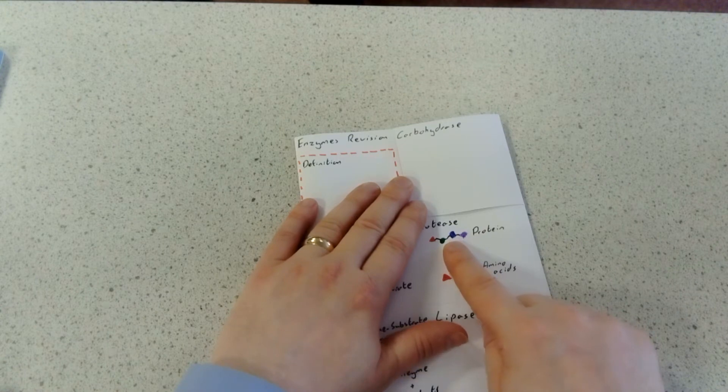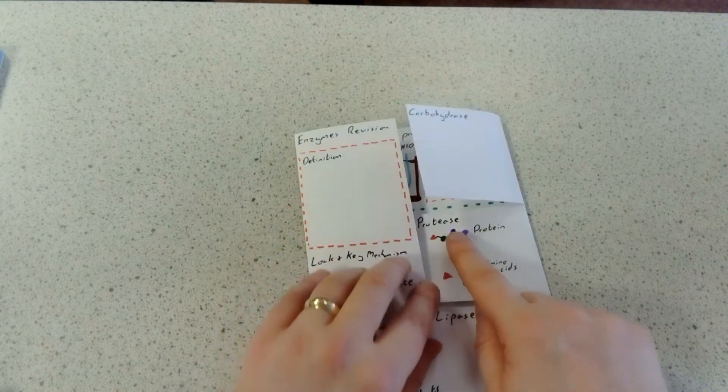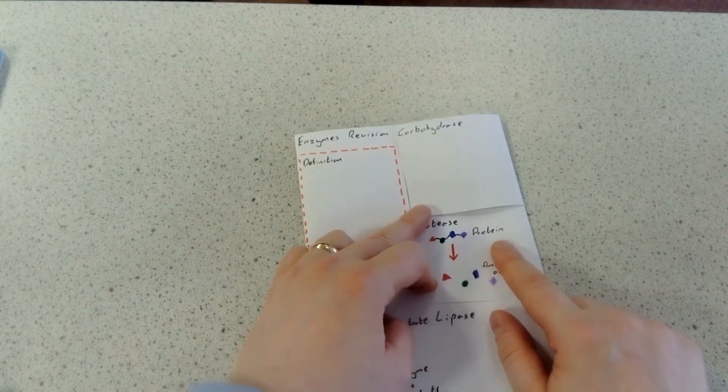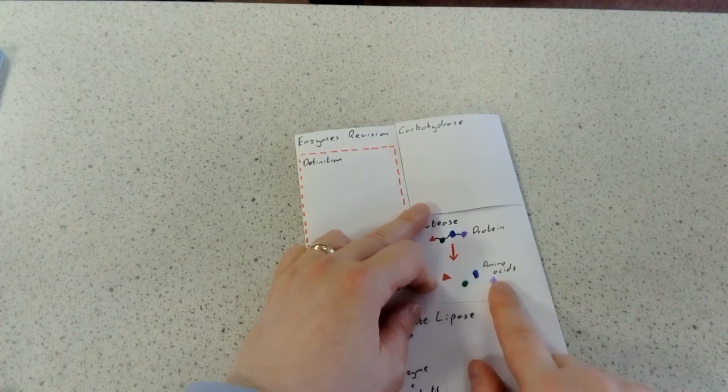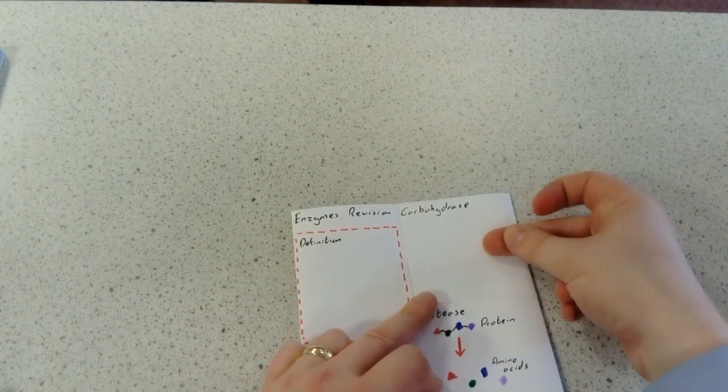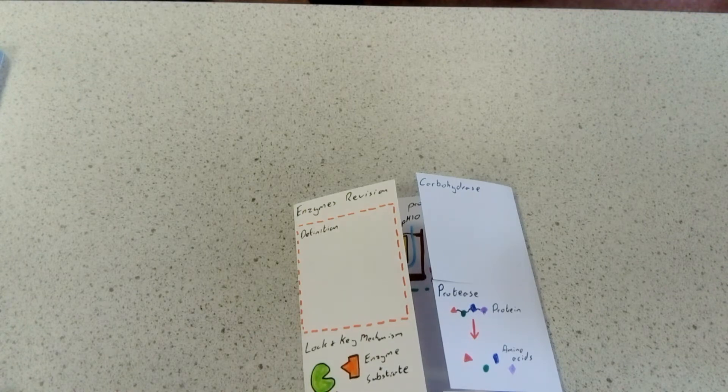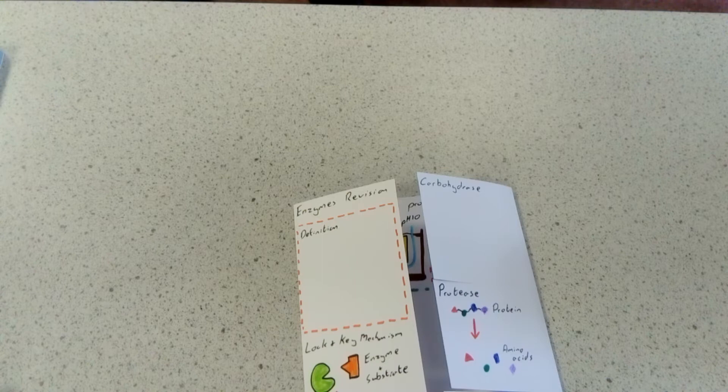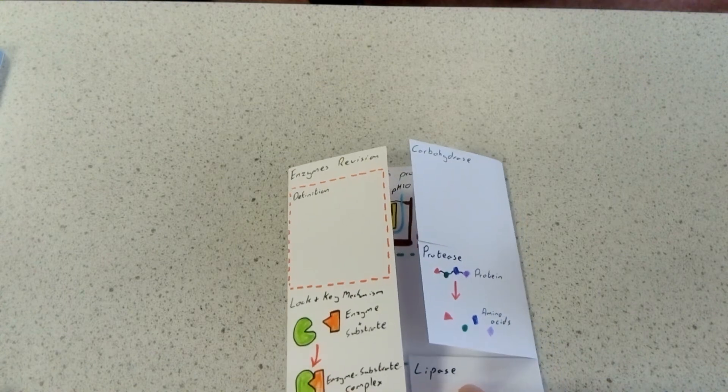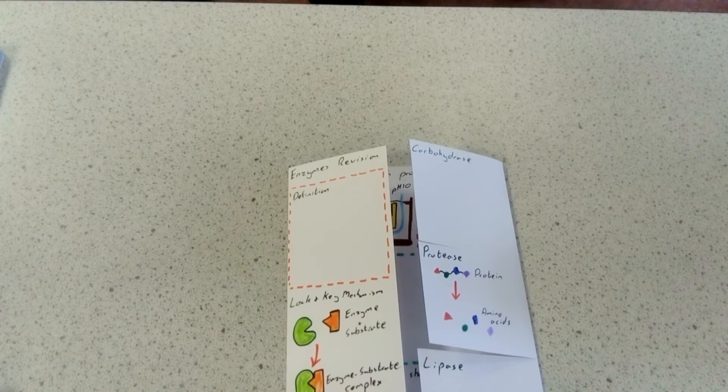For instance, protease breaks down proteins into amino acids. Do the same for carbohydrases—they break down long carbohydrates into glucose or sugars. Lipases break down lipids, which are fats, into glycerol and fatty acids.